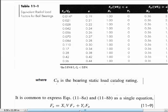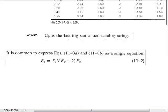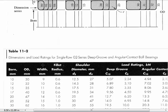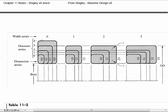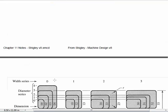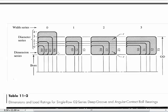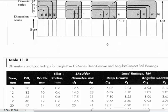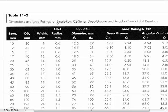This is the equation solved for FE. Finally we get to some bearing tables. This table describes various sizes and geometries of bearings, showing different width series. It shows how various numbers vary within a bearing family. This table is for single-row O2 series deep groove and angular contact ball bearings.